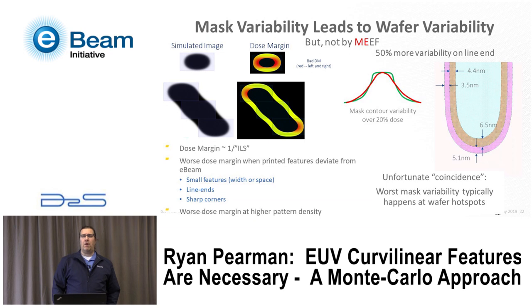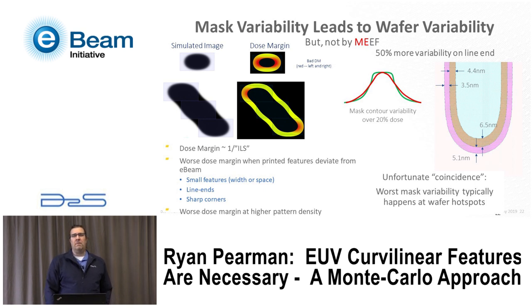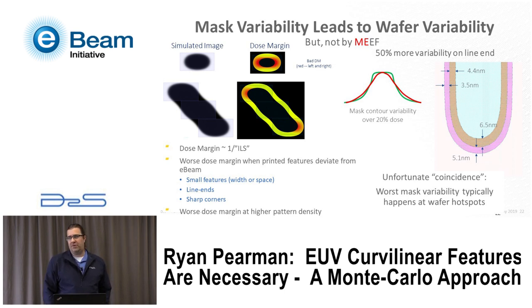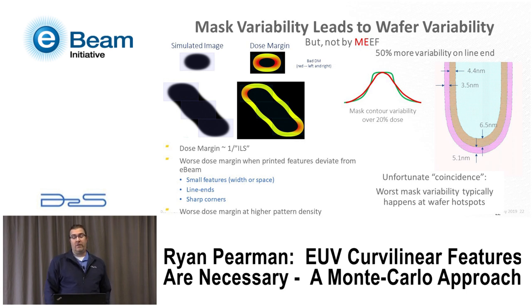Now let's talk about mask variability and in particular MEF. MEF is the term OPC engineers or lithographers use to lump all mask errors together, but really there are two parts. Lithographers typically talk about the EF — the error factor portion — which tells you how much the wafer contour changes as a function of changing the mask contour. It usually ignores the mask error portion, and it's the mask error that becomes the problem and is why we're doing this study.